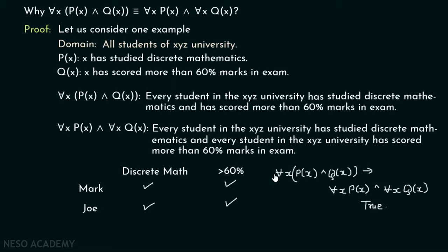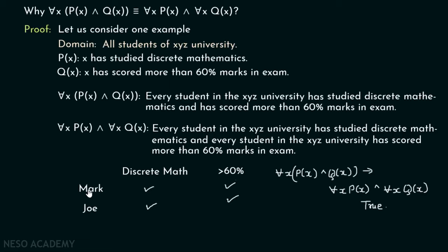Now consider the backward implication: for all x P(x) and for all x Q(x) implies for all x P(x) ∧ Q(x). Suppose every student has studied discrete mathematics and every student has scored more than 60 percent marks. Then clearly every student has studied discrete mathematics and scored more than 60 percent marks, so for all x P(x) ∧ Q(x) is true. The backward implication is also satisfied.